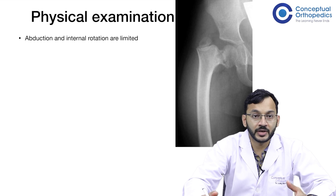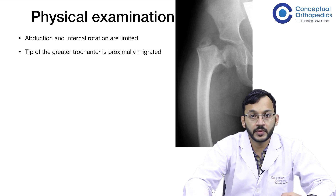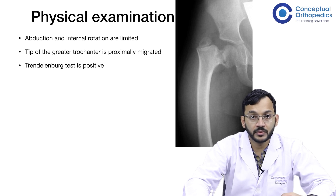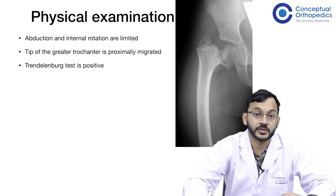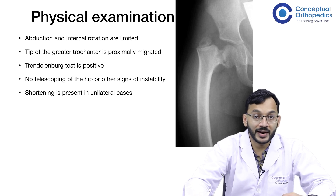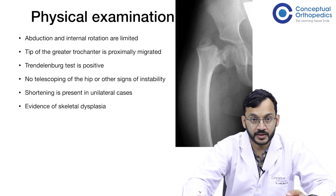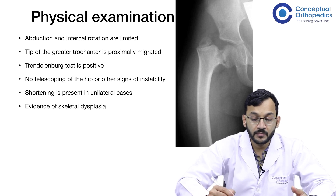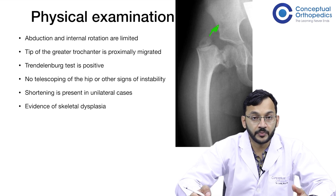On physical examination, there is restriction of abduction and internal rotation. The tip of the greater trochanter is proximally migrated. The Trendelenburg test is positive. There is no telescopy of the hip or other signs of instability. There is shortening present in unilateral cases, and there could be evidence of skeletal dysplasia. Abduction is limited because the arc present is very small.